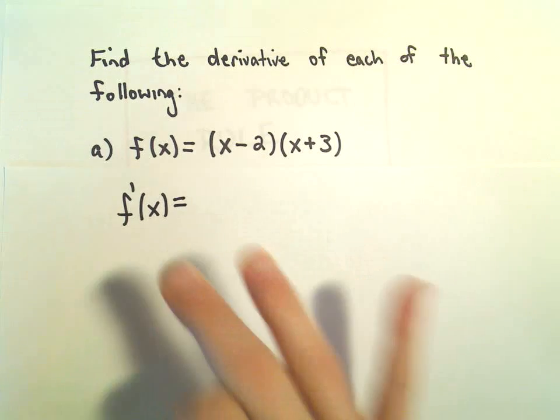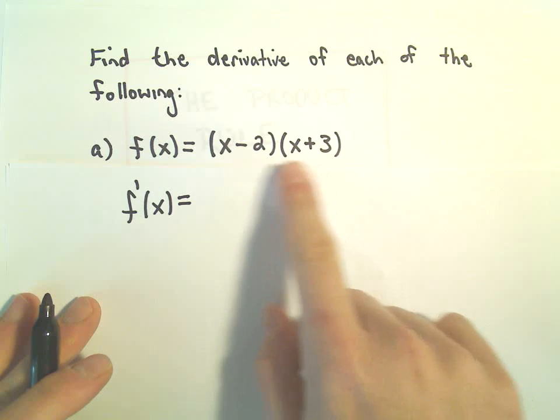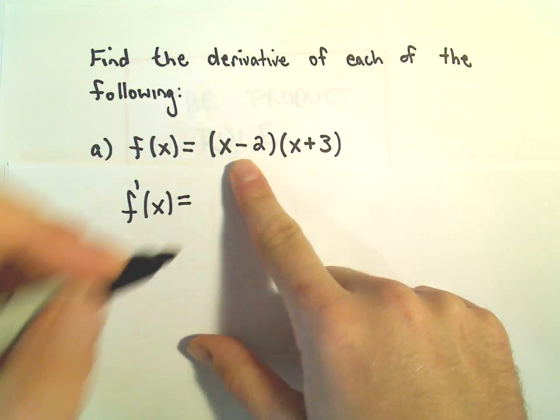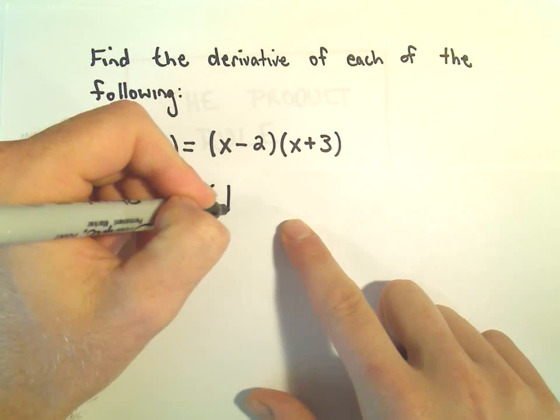So again, the product rule says take the derivative of one of these two factors. So I'm going to take the derivative of the (x-2), well the derivative of 1x is just 1, the derivative of a constant is just 0.